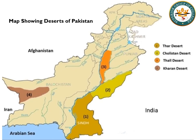The fifth desert is the cold desert in Gilgit-Baltistan, which is present in Skardu. This is called the Katpanna Desert, and it is located in Pakistan's northern areas in Gilgit-Baltistan. This is the fifth desert of Pakistan. Now let us talk about the wildlife present in these five deserts.